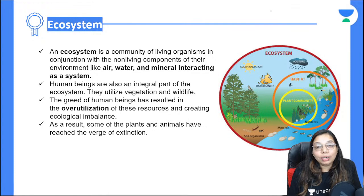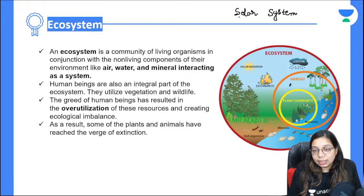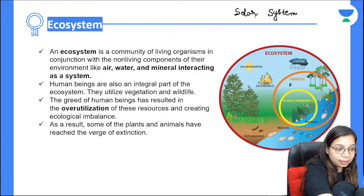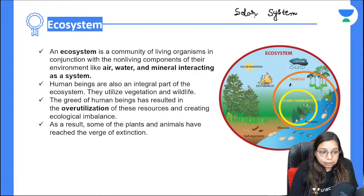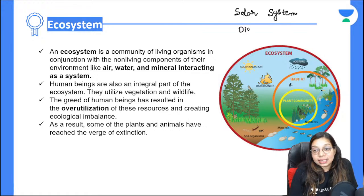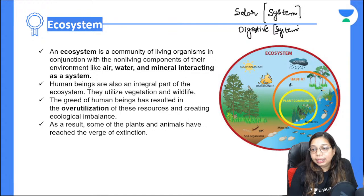What is an ecosystem? You have read many words that contain the word 'system' — like solar system. Think of more such words, like digestive system from biology. Wherever 'system' appears, there are interdependencies — because system means something made up of many things working together.